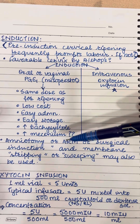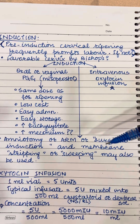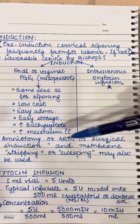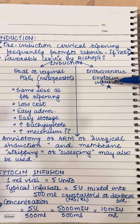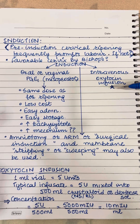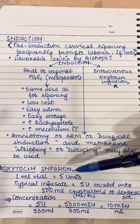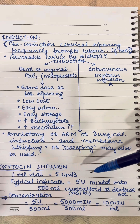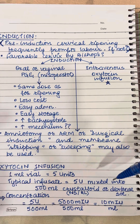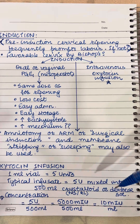We can also proceed with amniotomy or ARM, surgical induction, or membrane stripping and sweeping. But the most commonly used agent is intravenous oxytocin infusion. Oxytocin is available in 1 ml vials which contain 5 units. A typical infusate is made of 5 units mixed into 500 ml of crystalloid, i.e., NS or RL or dextrose solution.